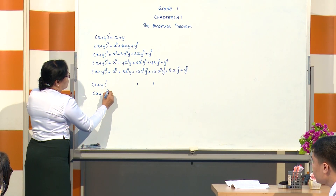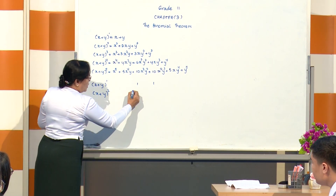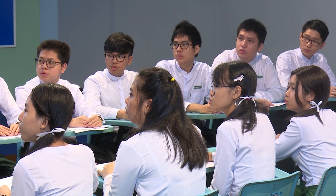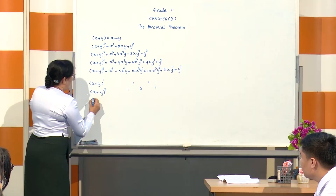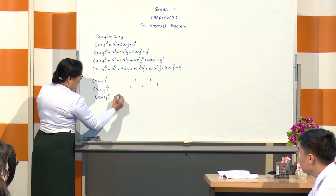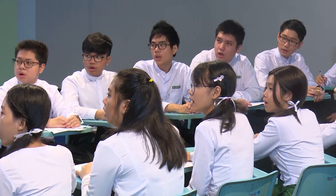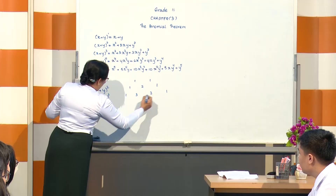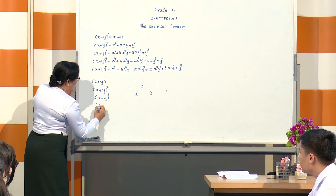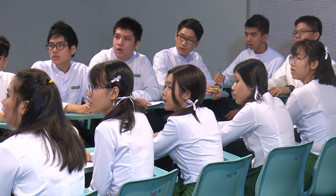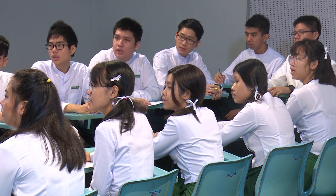Let's build Pascal's Triangle. For (x+y) squared, the coefficients are 1, 2, 1. For (x+y) cubed, the coefficients are 1, 3, 3, 1. For (x+y) to the power four, the coefficients are 1, 4, 6, 4, 1.